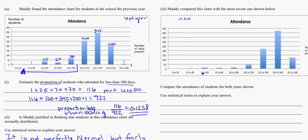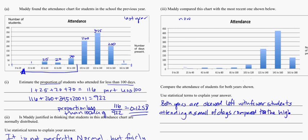The first thing that I might notice is that both of them are skewed to the left. Both of them have a tail off to the left, you'll notice that here. So we could say both years are skewed left with fewer students attending a small number of days compared